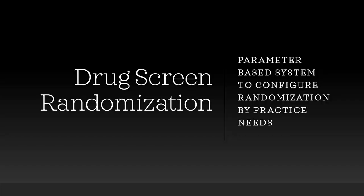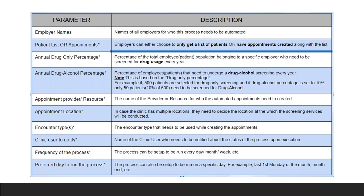Our next screen is drug screen randomization. This gives you the ability to configure randomization based on your practice's needs. It is set up when you start your practice and there are different parameters and ways randomization can be configured. We can generate a list of patients who need random drug screens, or we can actually create appointments for those patients along with providing a list — a good way to give employers the ability to generate random drug screens without anyone at the employer needing to pull that information or take responsibility for knowing who is next.